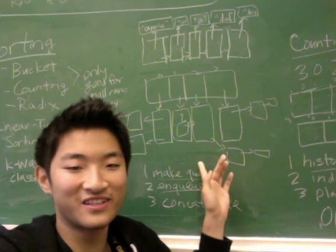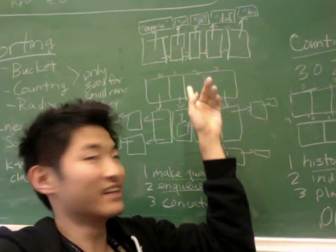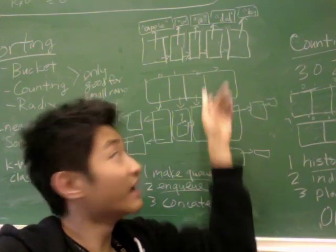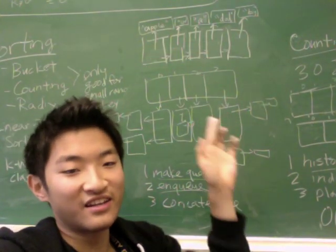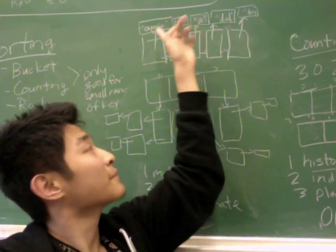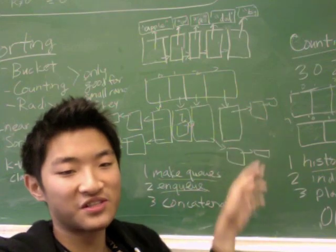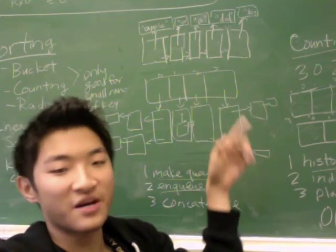You can see that Bucket Sort is a lot like hash tables without the compression function and unlimited keys. You can see why Bucket Sort is limited because you must have a very small range of keys or else your runtime will blow up.